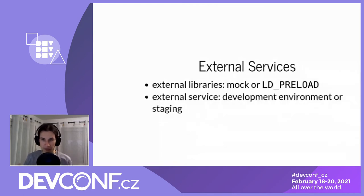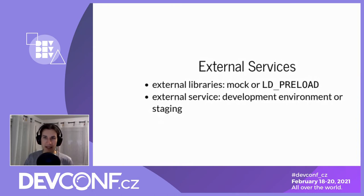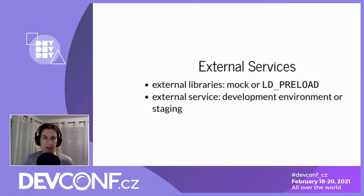If you have external services like Kubernetes or some cloud provider, check whether upstream has some sort of staging or development environment. Usually upstream projects have development environments that can be spun up for testing - use these to test against the real thing, especially for integration tests. Otherwise the service will change something or behave slightly differently than what you mocked out, your tests will be green but your actual extension will fail.